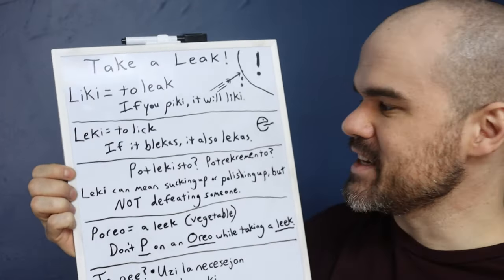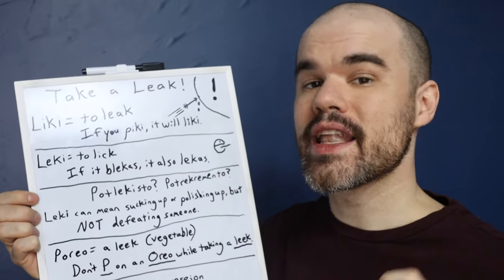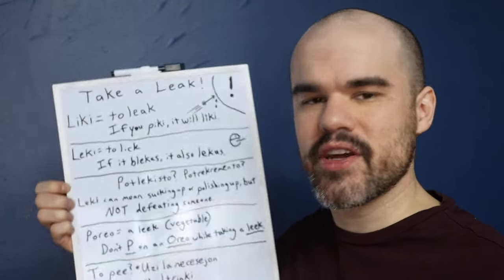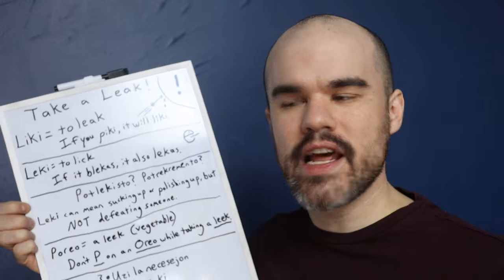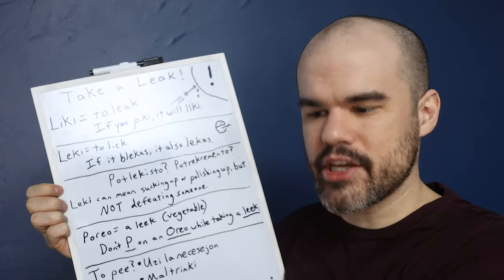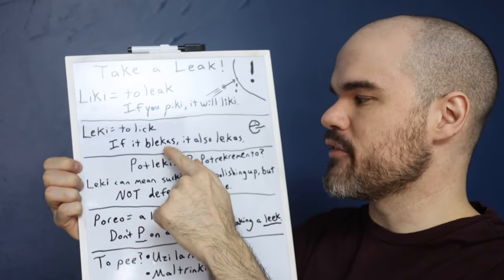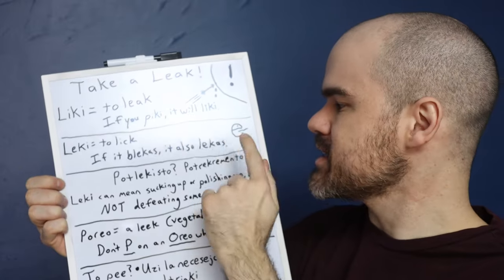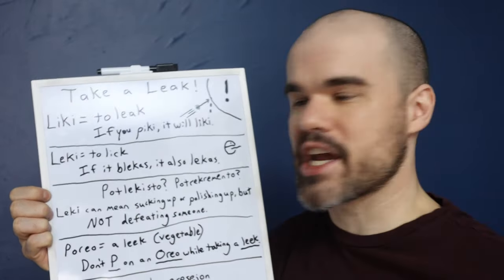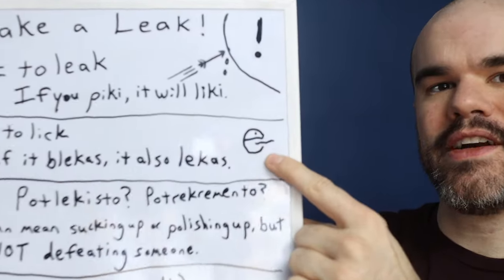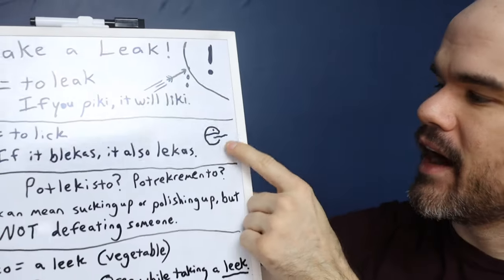A way to remember leki is: if it bleki, it also leki. Bleki is like 'meh' — like a sheep or cattle would bleat or make their animal noises. So if it makes sound, then it will also lick your hand — get the sugar out of your hand if it's a horse, for example. Animals often bleki and they often leki. Also, the shape of the letter E kind of looks like an open mouth in profile, so think of it as a little mouth ready to lick.